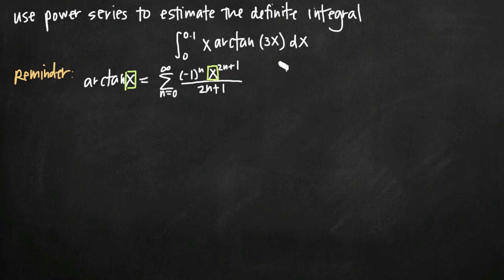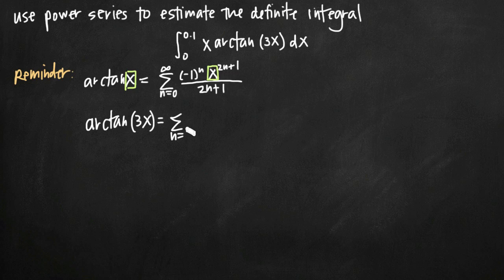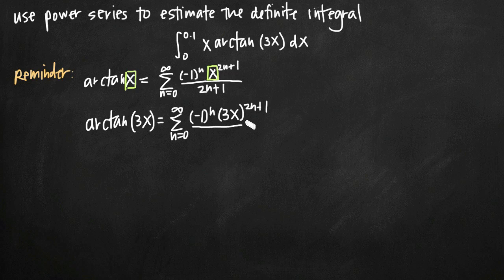The way we're going to do that is by first dealing with the 3x portion. We're going to write a formula for arctan of 3x, not just arctan of x. All we have to do is replace the x in this power series representation with 3x — we just plug 3x right into our power series representation, leaving everything else the same.